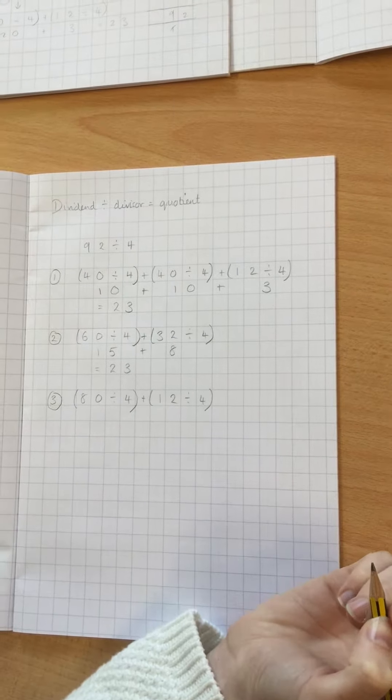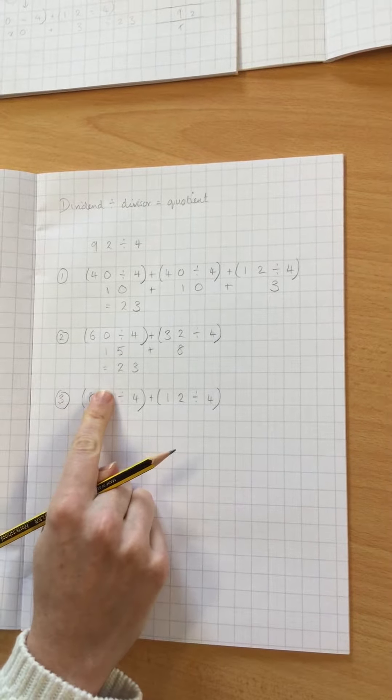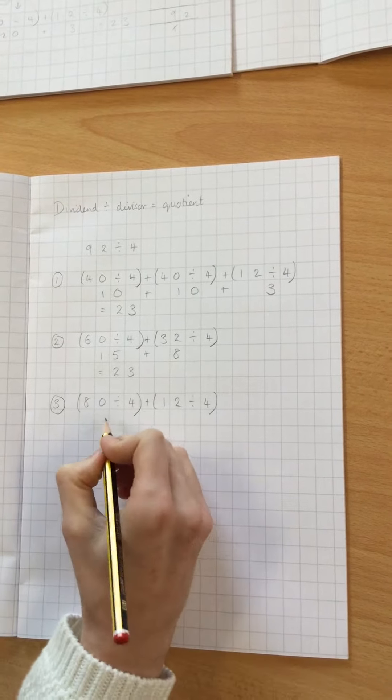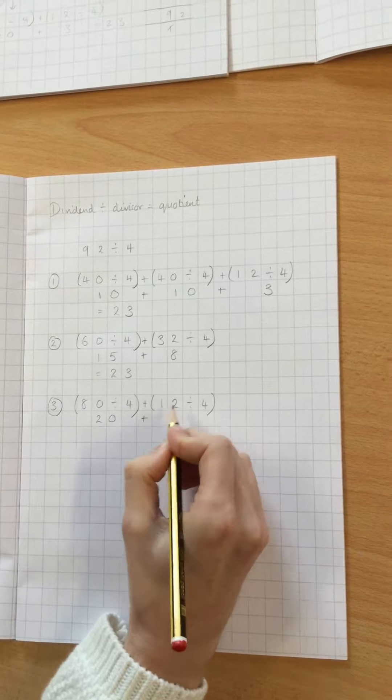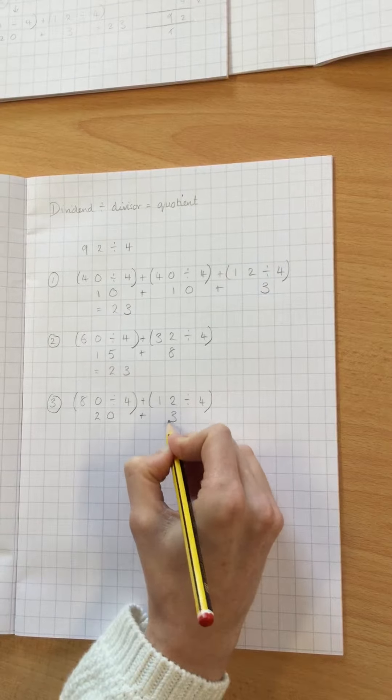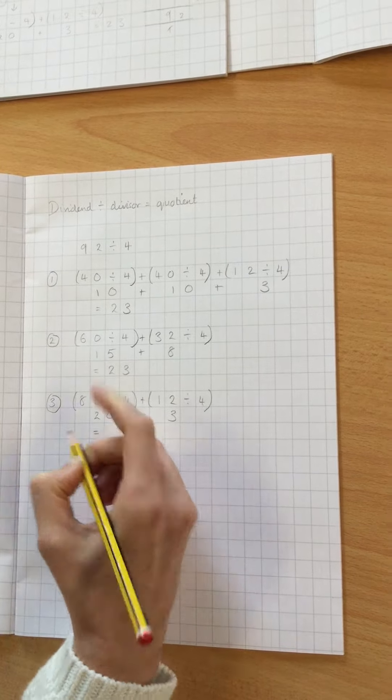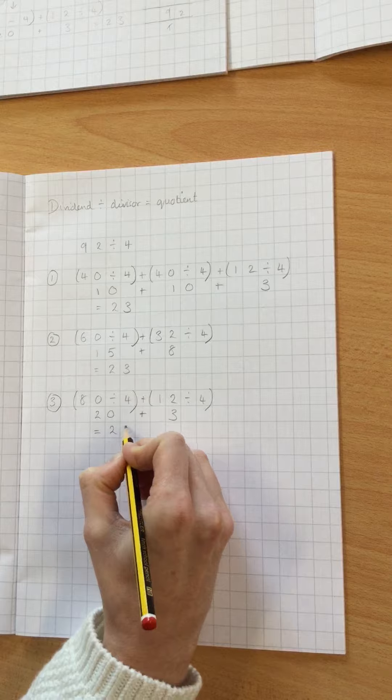I'm going to work out what each of those answers are. 8 divided by 4 is 2, so 80 divided by 4 is 10 times bigger, which is 20. Add 12 divided by 4, which is 3, and my overall answer, or quotient, would be 23.